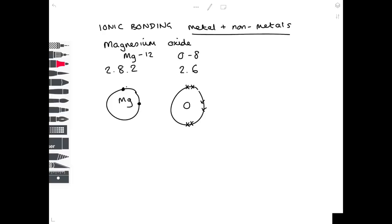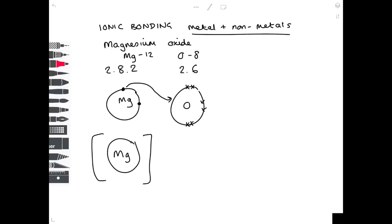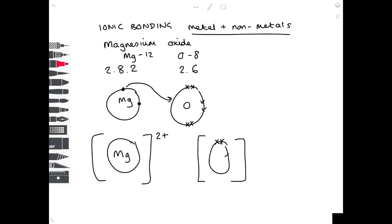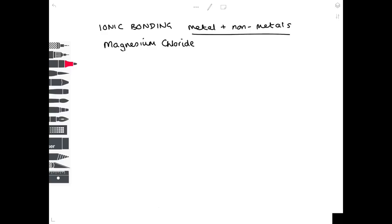In magnesium oxide: magnesium loses its two outer electrons — gaining a 2+ charge — and oxygen gains those two electrons, gaining a 2− charge. The two dots represent electrons from magnesium. Because magnesium lost two electrons its charge is 2+, oxygen gained two so its charge is 2−. The formula of magnesium oxide is therefore MgO.